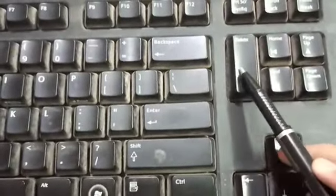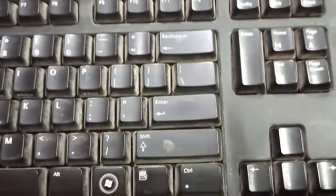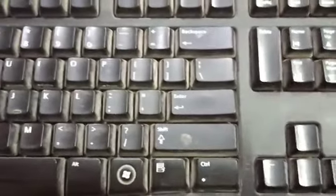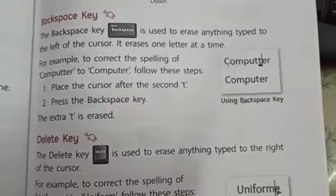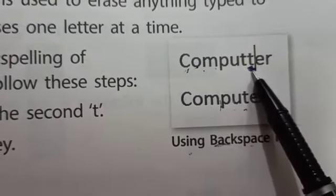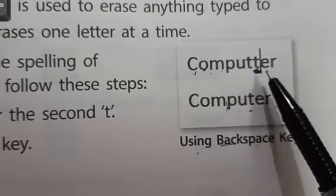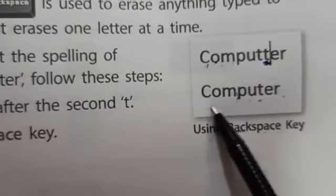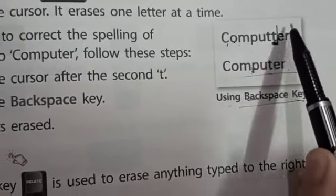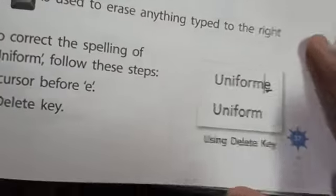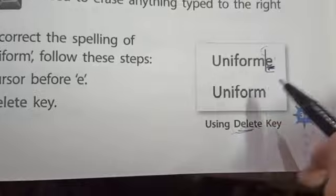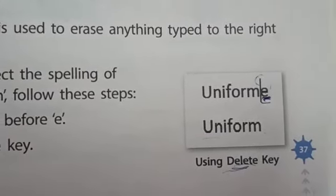The next key is the Delete key. The function of the Delete key is similar to the Backspace key, but the difference is that it erases the character to the right of the cursor. For example, suppose the word 'computed' is written and the cursor is placed on the letter T. When you press the Backspace key, it erases the character to the left of the cursor. But when you press the Delete key, it deletes the character to the right of the cursor.